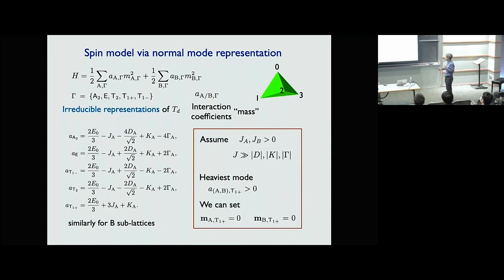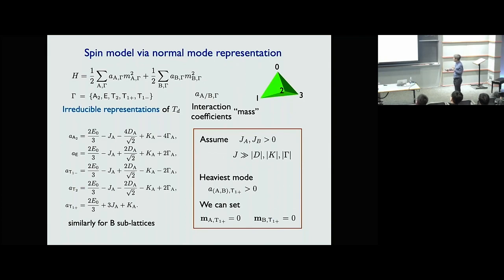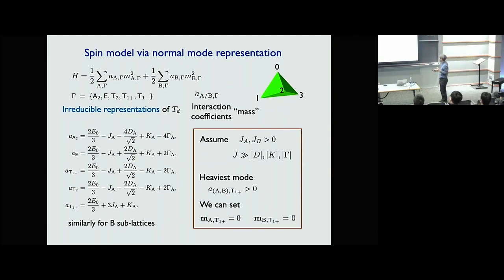Assuming Heisenberg dominates with anisotropic interactions smaller, the highest energy mode is the T1+ mode. I work in the energy scale below this excitation, effectively removing it — treating it as a high-energy mode and keeping the remaining normal modes as my active degrees of freedom.